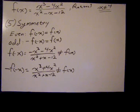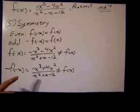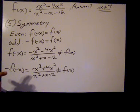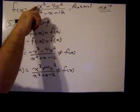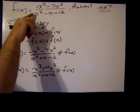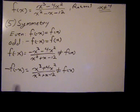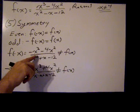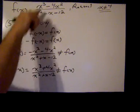You know, if you wanted to do it the old way and say, does negative f of x equal f of negative x? Well, negative f of x is negative x cubed plus 4x squared over the same denominator. And that still does not equal this right here. Because of this, that would be a plus and this is a minus.